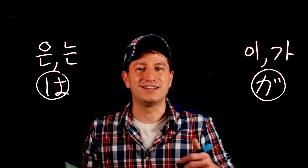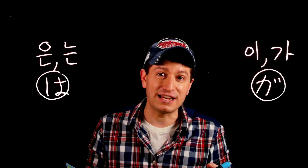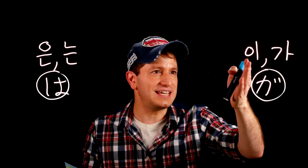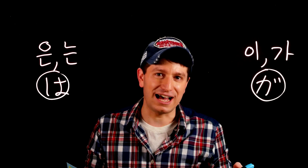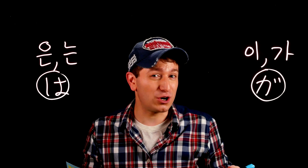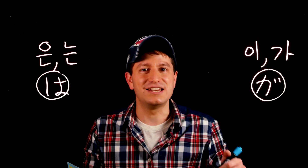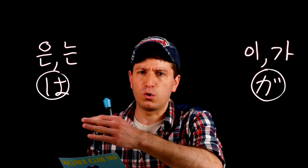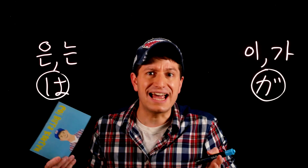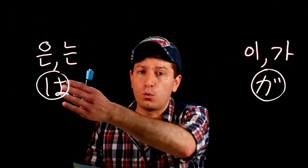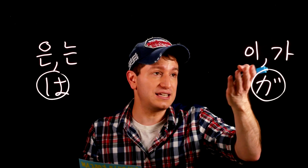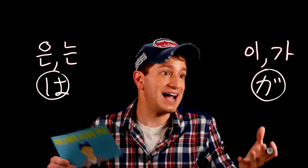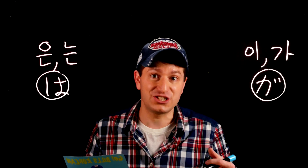은 and 는, the topic marker in Korean, and は in Japanese. 이 and 가, the subject marker in Korean, or が in Japanese. 은 and 는 work almost identically to は in Japanese, and so does 이 and 가, which works almost exactly like が in Japanese.